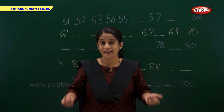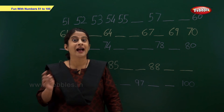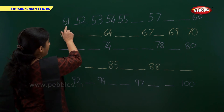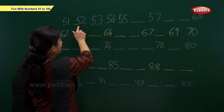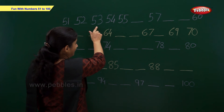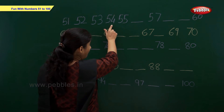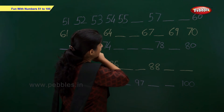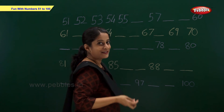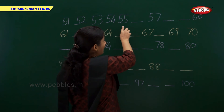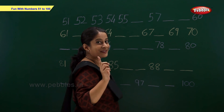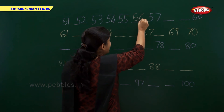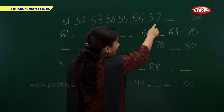Let us write numbers and complete the table. We have 51, 52, 53, 54, 55 and 57. Which number comes between 55 and 57? 56, right. 56, 57.